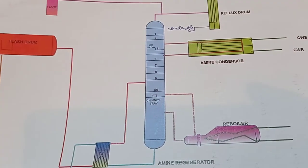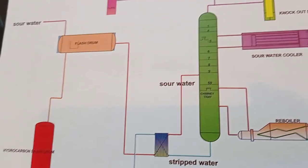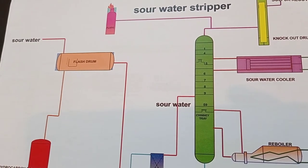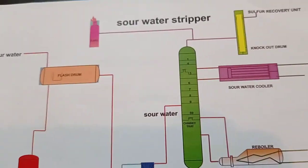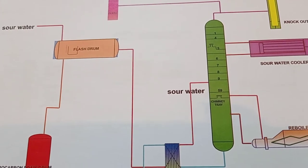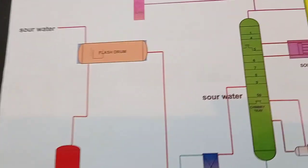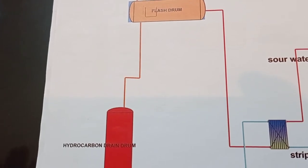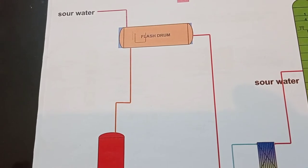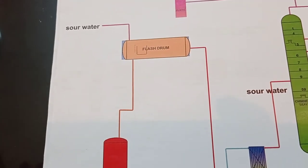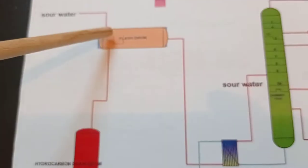Now for the sour water stripper. Sour water is water containing a noticeable amount of H₂S or other acidic compounds — H₂S is a very dangerous gas. We receive sour water from hydrotreating units, hydrocracking, merox (mercaptan removal), kerosene, and naphtha units.